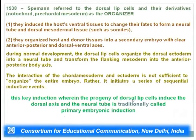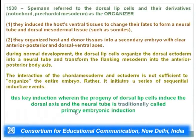Spemann referred to the dorsal lip cells and their derivatives — the notochordal and pre-chordal mesoderm — as the 'organizer,' because they induce the host ventral tissue to change fate to form a neural tube and dorsal mesodermal tissue such as somites, and they organize host and donor tissues into a secondary embryo with clear anterior-posterior and dorsal-ventral axes. This key induction where progeny of dorsal lip cells induce the dorsal axis and neural tube is called primary embryonic induction; all subsequent inductions organizing the entire embryo are termed secondary embryonic induction.